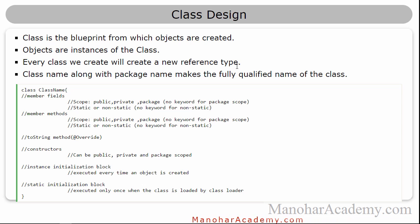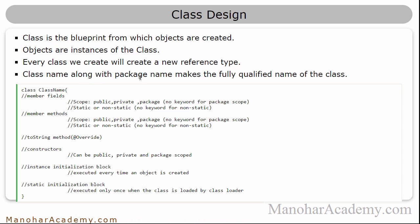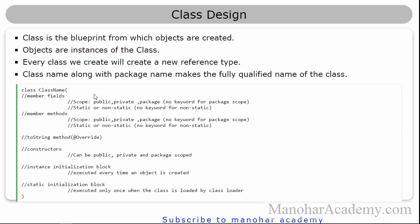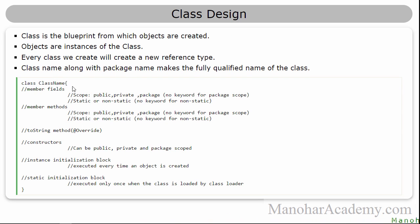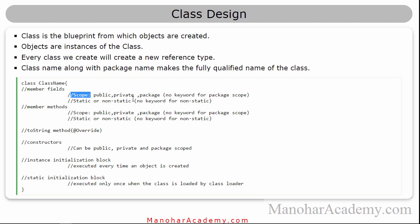Every class is a new reference type. So if you are creating a Student class, Student is the new reference type. We know about packages and how to include them in the class, and the class name along with the package name makes the fully qualified name of the class. Inside the class we can have member fields, and these member fields can have the scope of public, private, and package.